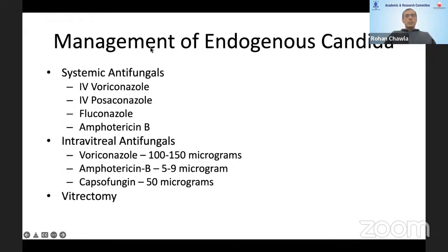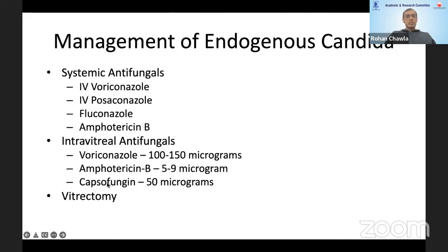Management is somewhat controversial and involves a combination of systemic antifungals, intravitreal antifungals, and vitrectomy. For choroidal involvement, intravenous antifungals are definitely needed. Amphotericin B is probably the most broad-spectrum but has systemic side effects, so one could start with safer agents such as voriconazole. Some agents can also be given orally, though cost becomes an issue. Intravitreal antifungals supplement systemic therapy, and caspofungin has recently been used given resistance to other antifungals in some candida organisms.